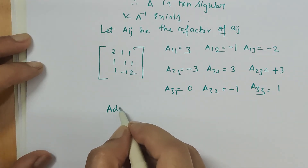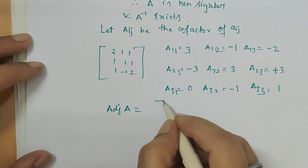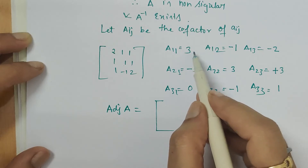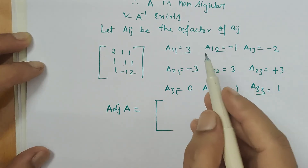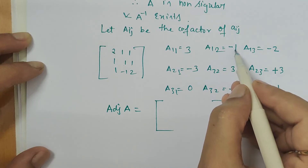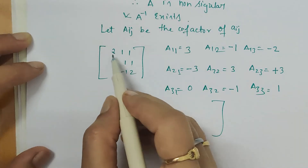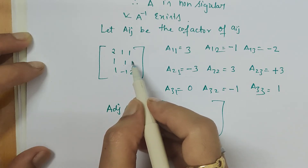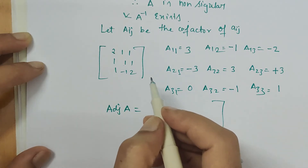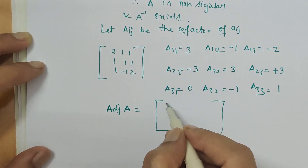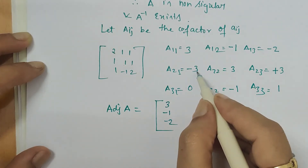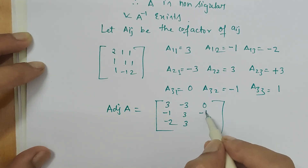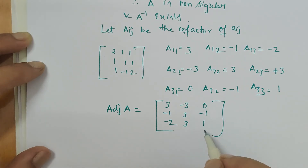These are the cofactor elements. This gives us the adjoint of A — but we must write it in transpose form. So the columns become rows: writing column-wise, we get 3, minus 1, minus 2 in the first row, then 3, 3, 3, then 0, minus 1, 1.